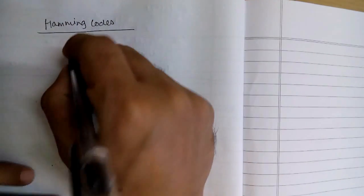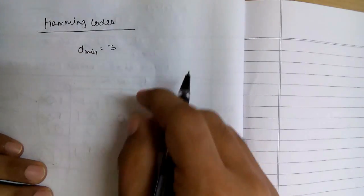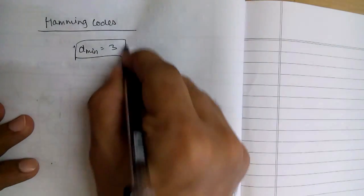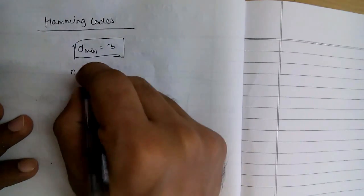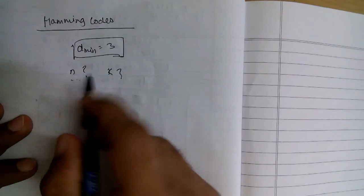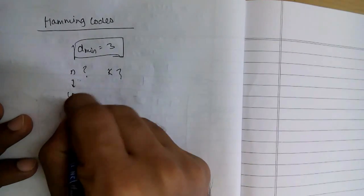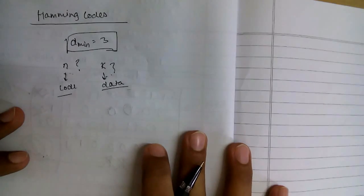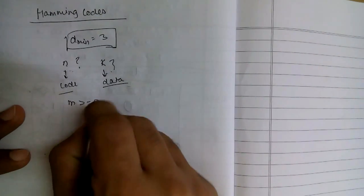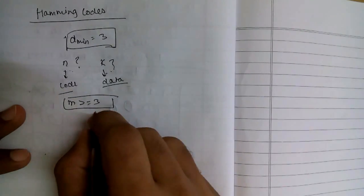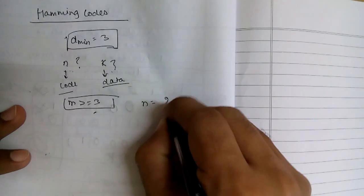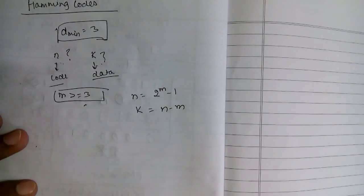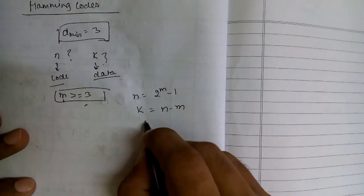Hamming codes were originally designed for dmin equal to 3, but we can expand it. To find n and k, we first choose m which is greater than or equal to 3. After choosing m, we can find n and k: n equals 2 raised to m minus 1, and k equals n minus m. The redundancy bits r equal m.